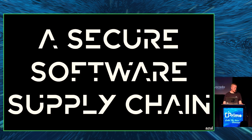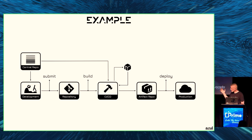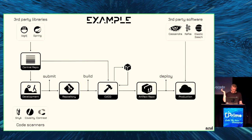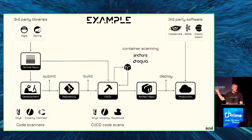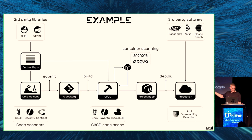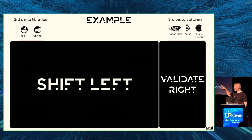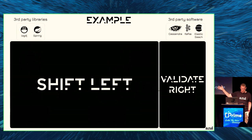For a secure software supply chain, you have your own supply chain plus third-party stuff like Spring, Log4j, Kafka, Cassandra, and Elasticsearch. You can use code scanners on the development side, CI/CD code scans in the pipeline, and container scanning software. On the right side — production — we propose using Azul's tool. This is what I mean by 'validate right': we shift left, yes, but we also validate on the right side that what the CI/CD system told us is correct.